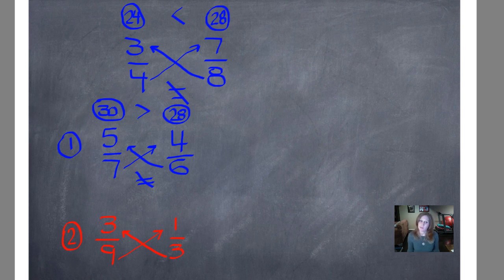Okay, you should have worked it out. Nine times one is nine. We'll write that nine right above there and circle it. Three times three is nine. And nine is equal to nine. So three-ninths is equal to one-third.